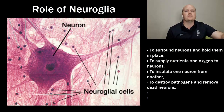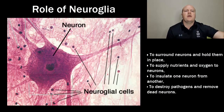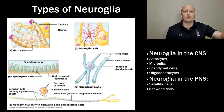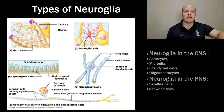Our neuroglia are our supporting cells — literally our nerve glue. Their job is to support, insulate, and protect the delicate neurons. They surround and hold neurons in place, supply nutrients and oxygen, insulate one neuron from another so signals don't get mixed up, and destroy pathogens and remove dead neurons. We have six types of neuroglia: four in the central nervous system and two in the peripheral nervous system. The CNS types are astrocytes, microglia, ependymal cells, and oligodendrocytes. The PNS types are satellite cells and Schwann cells.